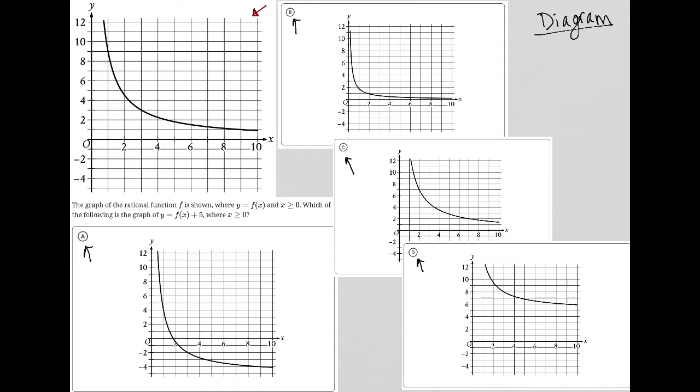It looks like we have a graph that is in decay. So let's see what the question actually says. It says the graph of the rational function f is shown where y equals f of x and x is greater than or equal to zero, which just basically means we're on the positive side of the x-axis.